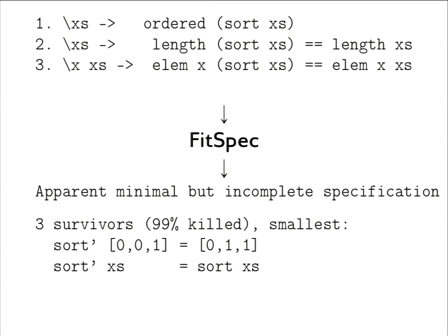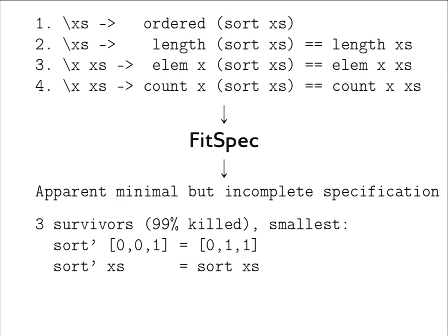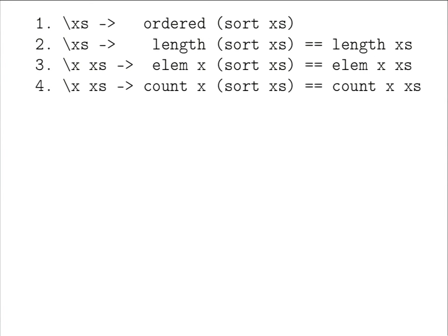What should we do with this surviving mutant? We should replace or augment the last property. A suggestion from the audience — and a good one — would be to add a property saying the counts of elements do not change: counting a specific element should remain the same between the original and resulting lists. Now we have four properties; we've refined and made the specification stronger.